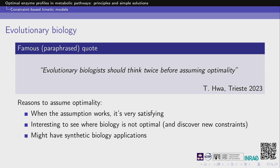This is a bit closer to my heart specifically: it could have synthetic biology applications. We're not just thinking about understanding current biology, but also how we can engineer biology in the future. So that's another reason to think about optimality.